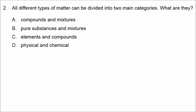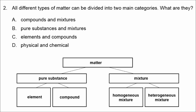Number two is asking us to classify all different types of matter into two main categories. Matter is divided into a pure substance or a mixture, so the correct answer is B.